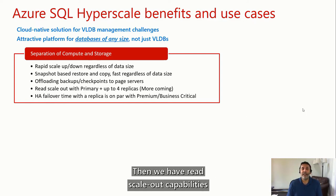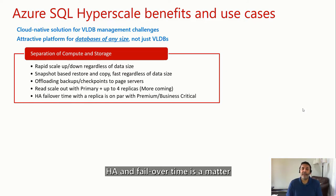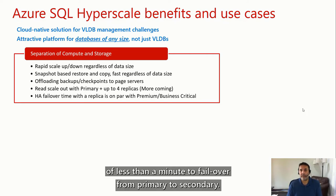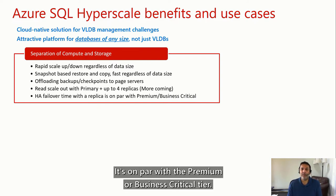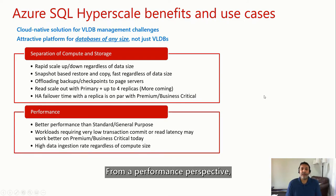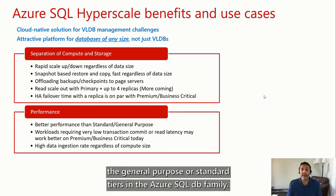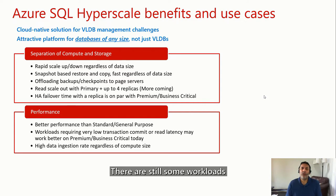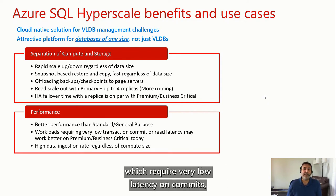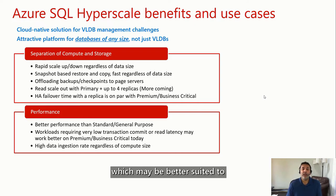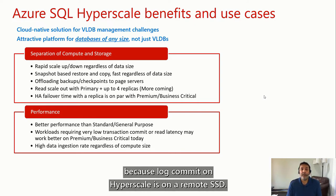We have read scale-out capabilities where we can scale out up to four replicas. HA failover time is a matter of seconds — less than a minute to failover from primary to secondary. It's on par with the premium or business critical tier. From a performance perspective, the performance is generally better than the general purpose or standard tiers in the Azure SQL DB family. There are still some workloads which require very low latency on commits — we're talking about latency, not throughput — which may be better suited to business critical, because log commit on Hyperscale is on a remote SSD.